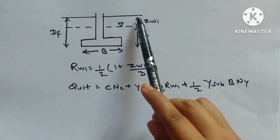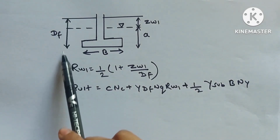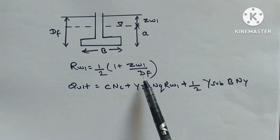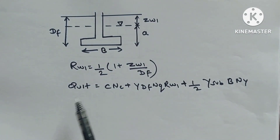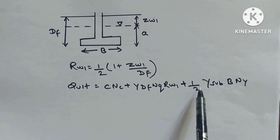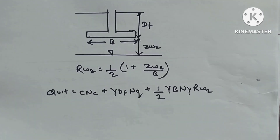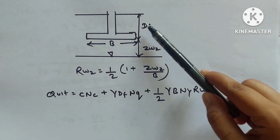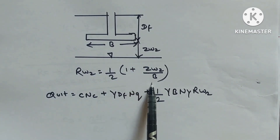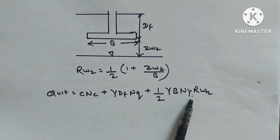Water table correction: When water table is above footing (Z1), Rw1 = (1/2)(1 + Zw1/Df). When water table is below footing, Rw2 = Zw2/B. Ultimate bearing capacity qu = cNc + γDfNq + (1/2)γBNγ·Rw2.